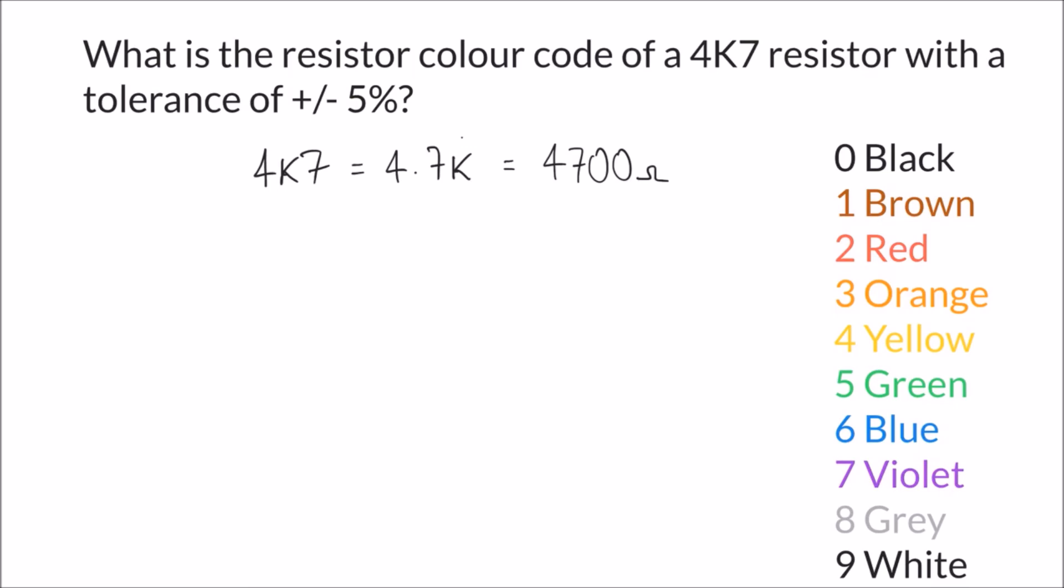First of all the first digit of this value is a 4, and we know that the number 4 corresponds with the color yellow, so our first band is going to be yellow. The second digit of our value is a 7, and we know that the number 7 corresponds with the color violet, so violet is our second band. And then the third band being our multiplier - how many more zeros have been added on to our value? Well the answer is two, and so red is our third band. Finally we're told that this resistor has a tolerance of plus or minus 5%, and we know that that corresponds with the color gold, and so our last band there is a gold one.